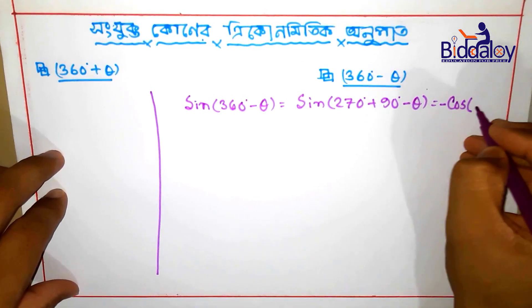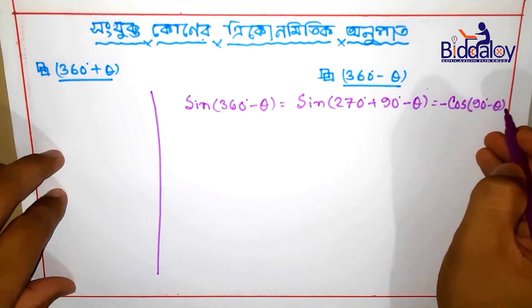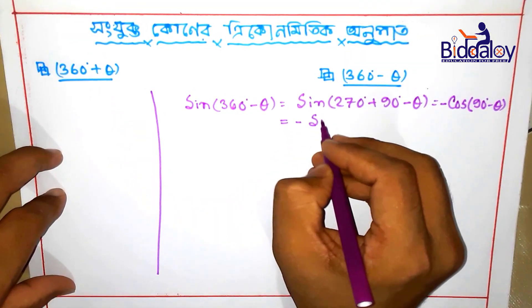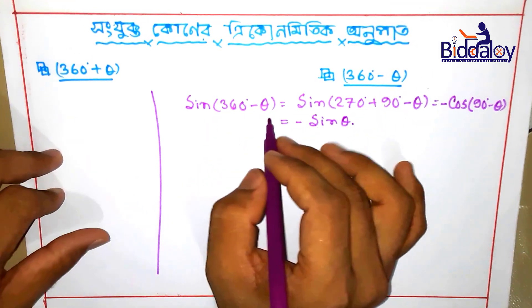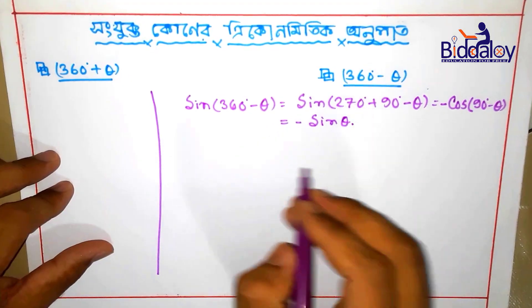So we take 90 minus theta. 90 minus theta equals sine theta. And for scientific purposes, the scientists had to verify minus theta equal to.